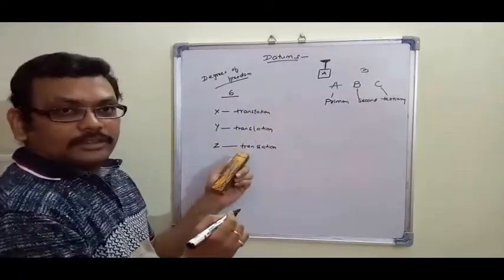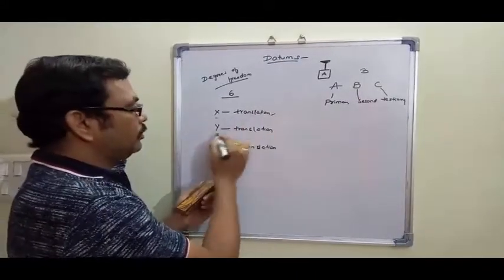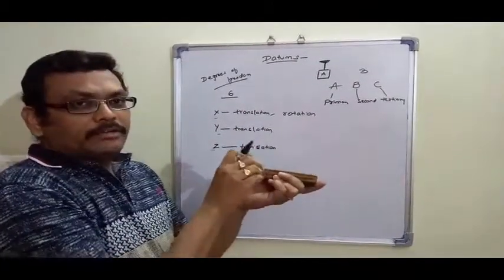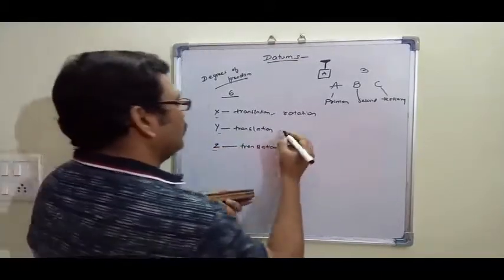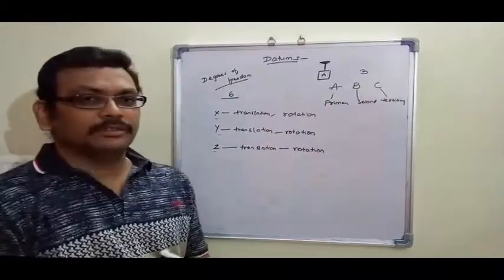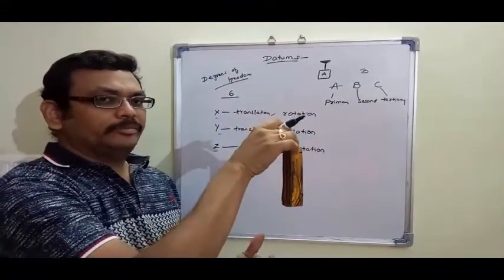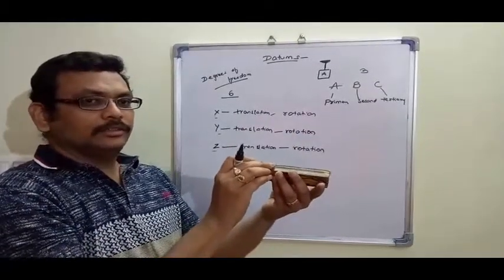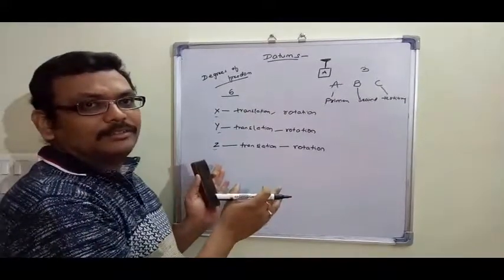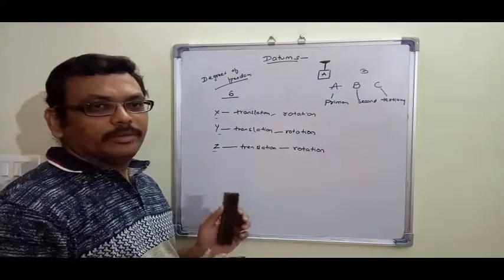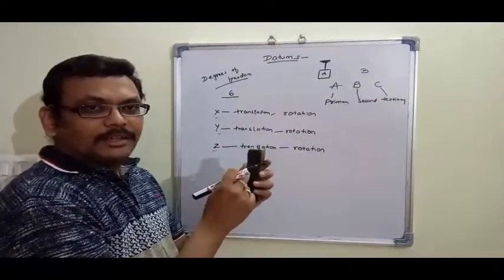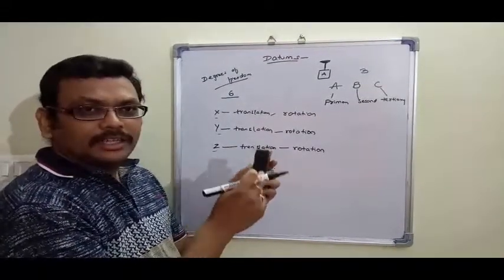We have to arrest a component with respect to X, Y, and Z — rotation with respect to the X axis, rotation with respect to the Y axis, and rotation with respect to the Z axis. This is why we call it six degrees of freedom: X-axis translation and rotation, Y-axis translation and rotation, and Z-axis translation and rotation.